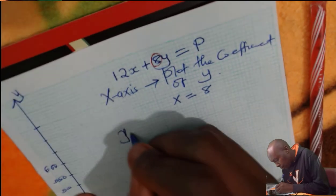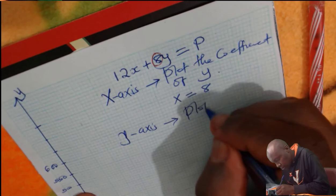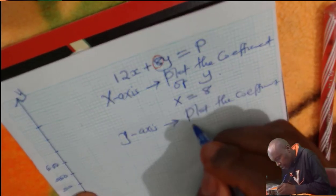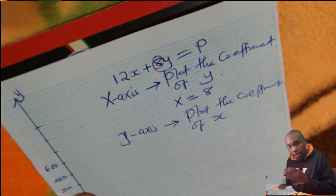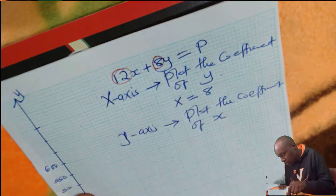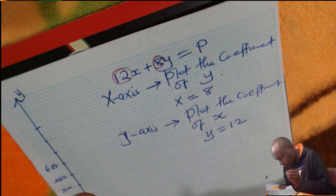Then for the y-axis, you shall plot the coefficient of x. And which is the coefficient of x? The coefficient of x is the term that multiplies x, which is 12. 12 is the coefficient of x. So y is equals to 12.